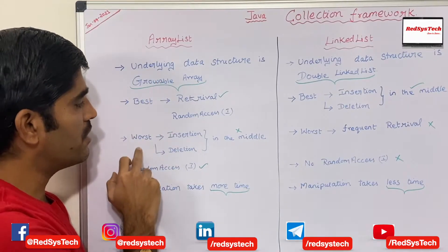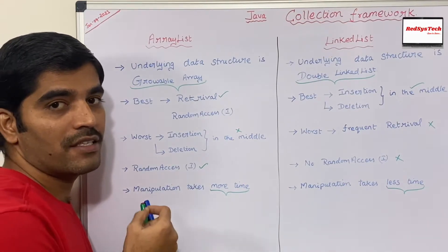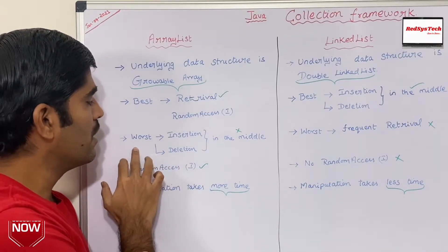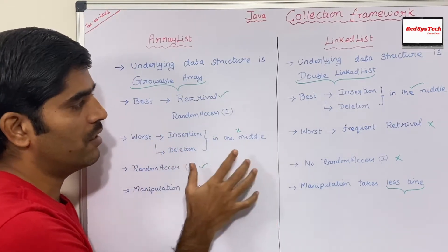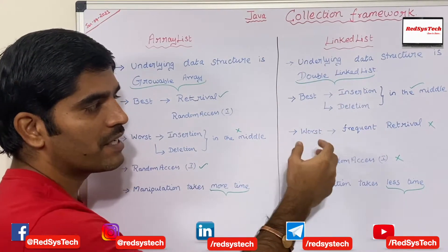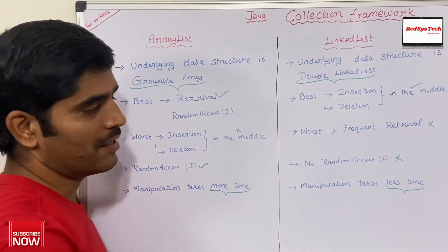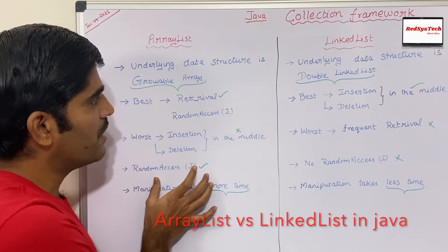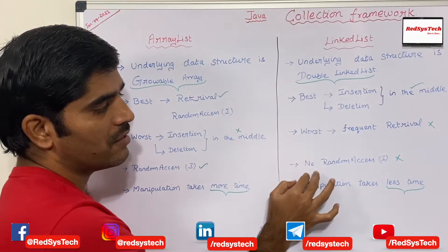The worst choice for ArrayList is if you want to insert or delete in the middle, because whenever you insert or delete something inside the ArrayList, the entire data will be shifted. That is the reason it is not advisable to use ArrayList if the frequent operation is insertion or deletion in the middle of the list. In terms of LinkedList, the worst choice is frequent retrieval. If you want to do multiple retrievals, you don't want to use LinkedList. Since ArrayList implements RandomAccess, retrieval is very easy. But LinkedList doesn't implement RandomAccess.